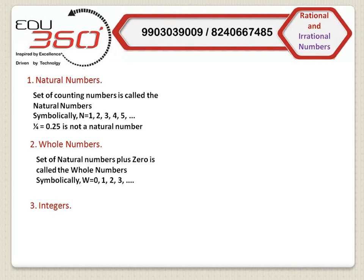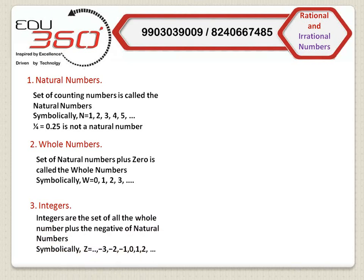Now come to the third point, that is integers. Integers are the set of all whole numbers plus the negative of natural numbers. If we denote the set of integers by Z, it will include minus infinity to plus infinity, including 0 but excluding any fractions or decimal points. Let us try to understand the concepts of natural numbers, whole numbers, and integers with the help of a Venn diagram.